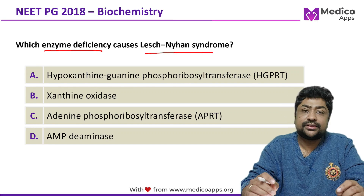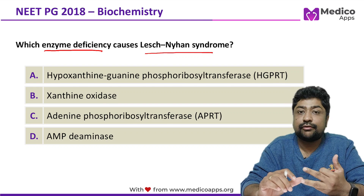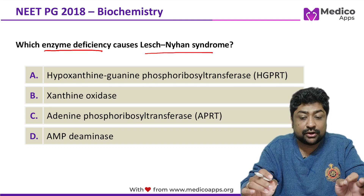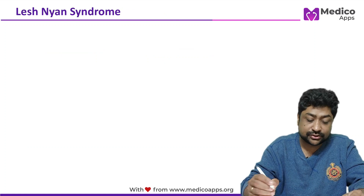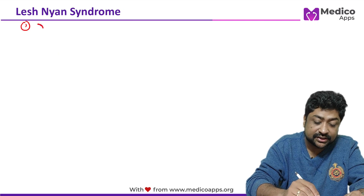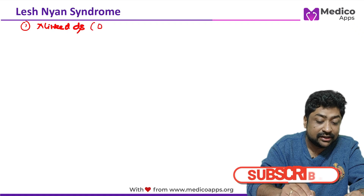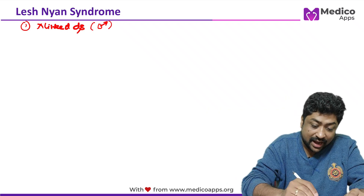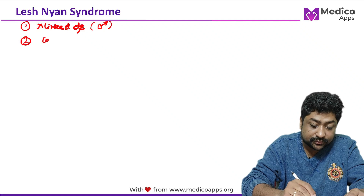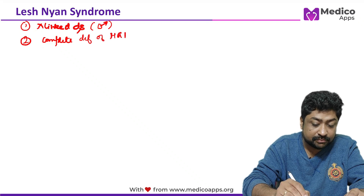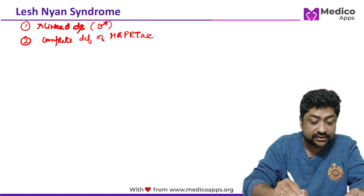Lesch-Nyhan syndrome is a very high-yield topic — questions have been asked from biochemistry, pediatrics, and internal medicine covering diagnosis and management. The first important point to remember is that it is an X-linked disorder, meaning primarily males will be affected. It is caused by a complete deficiency of the enzyme HGPRT.